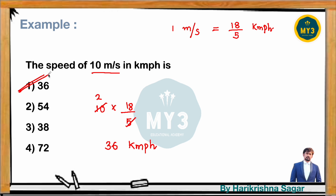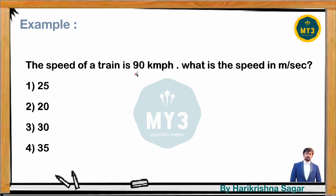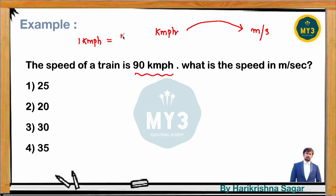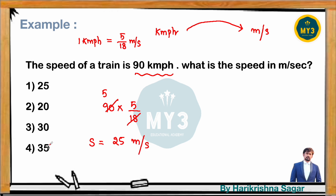Let's take one more example. The speed of a train is 90 kilometers per hour. What is the speed in meters per second? Using 1 km/hr = 5/18 m/s: 90 × 5/18 = 5 × 5 = 25 meters per second. So 90 km/hr equals 25 m/s, which is available as option 1.